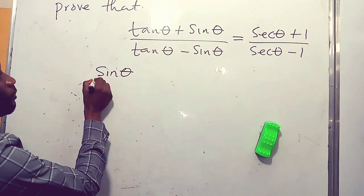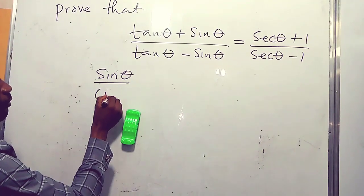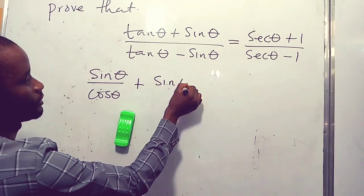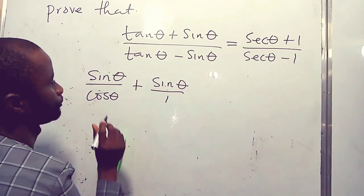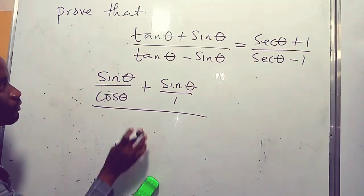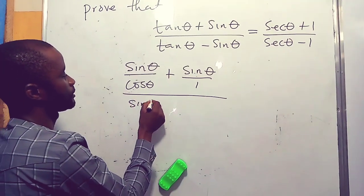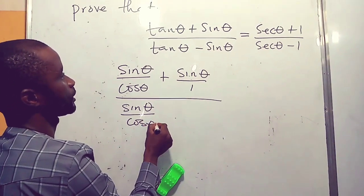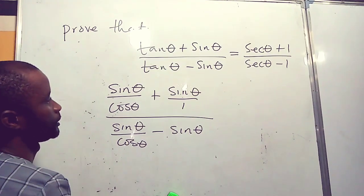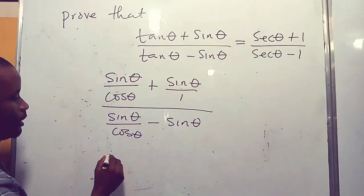Substituting, the numerator becomes sine theta over cos theta plus sine theta over one, all over the denominator which also has tan theta — sine theta over cos theta minus sine theta.